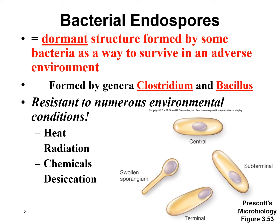These endospores are resistant to a lot of environmental conditions — they're really hard to kill. They will survive heat; you can kill them with autoclaves, but if you try to kill them with boiling water, you would have to boil the water for 13 hours to kill the endospore, which no one is going to do. They can also survive radiation, like UV radiation, and they're hard to kill with a lot of different chemicals, and they can also survive being dried out as well.